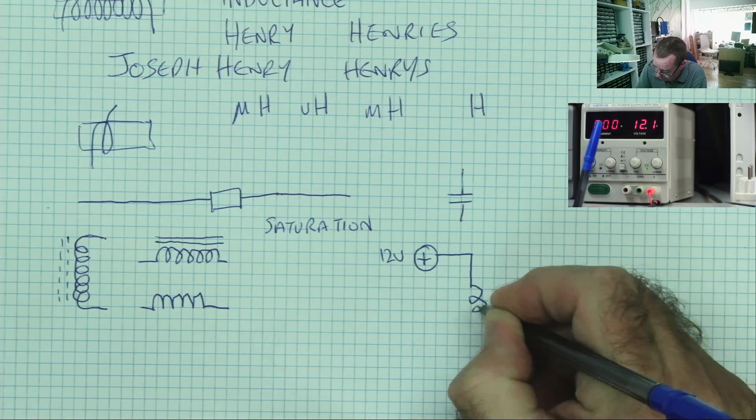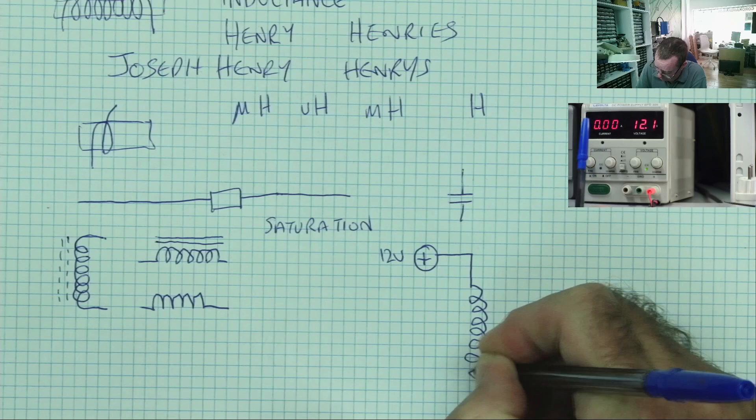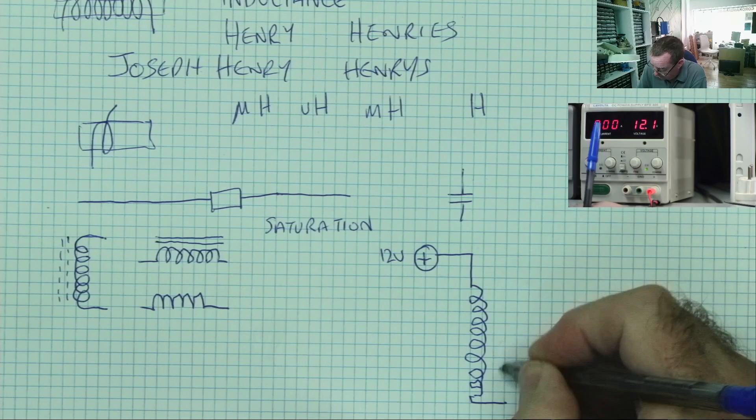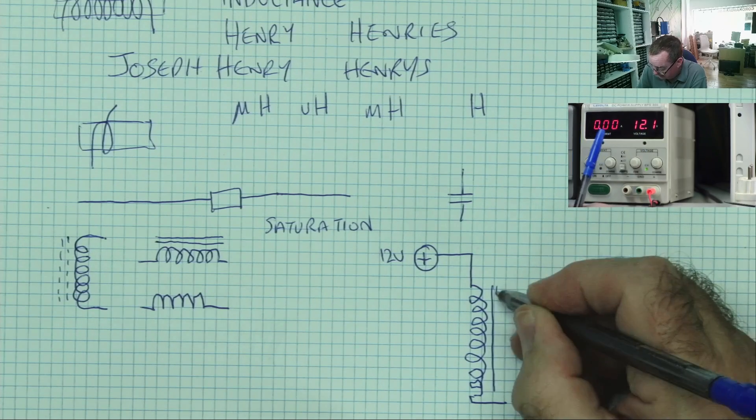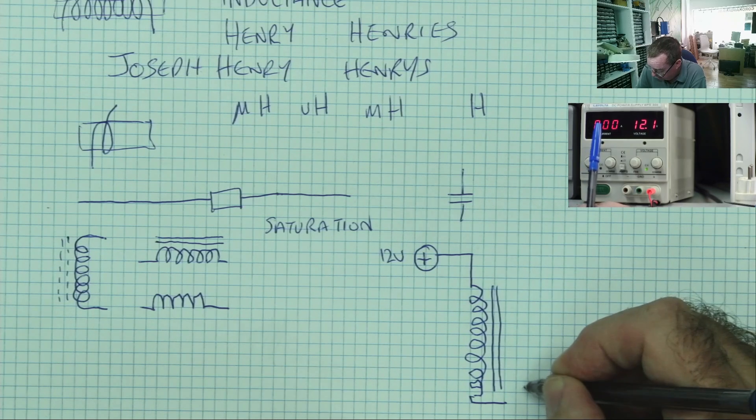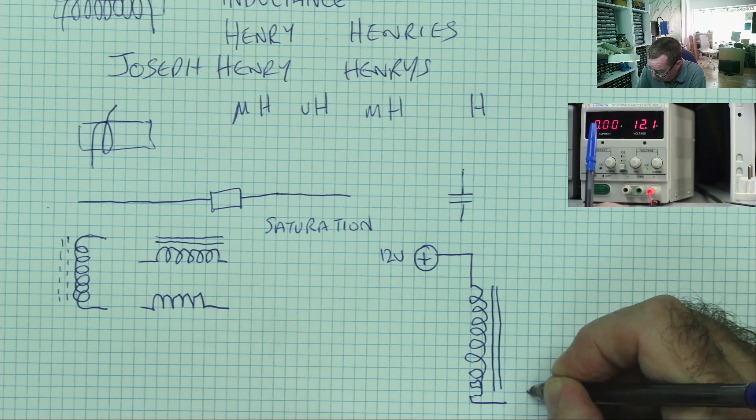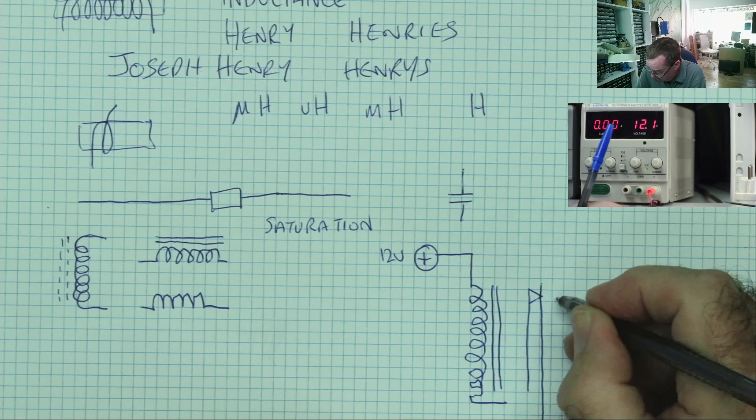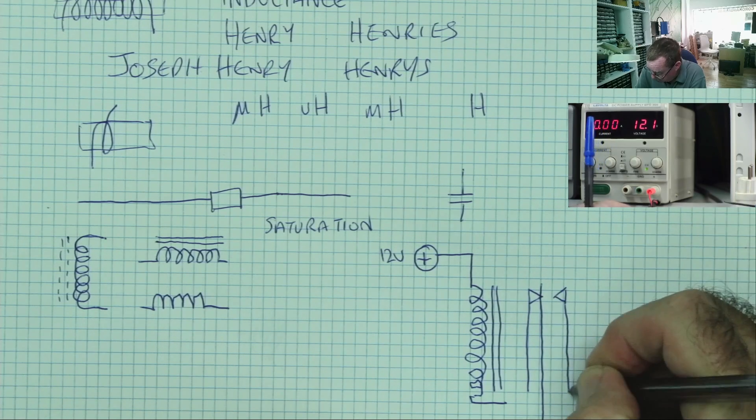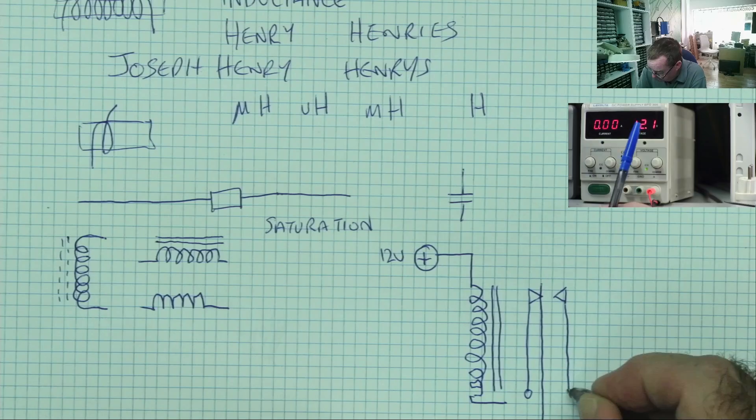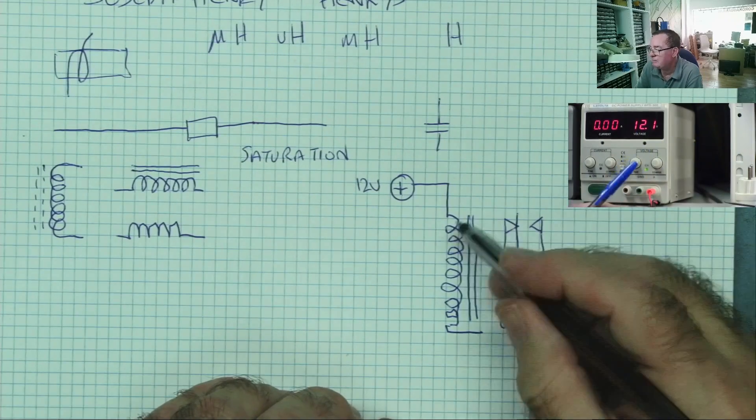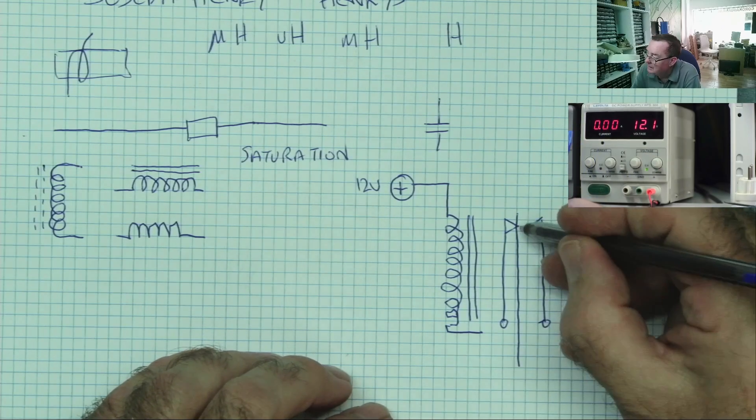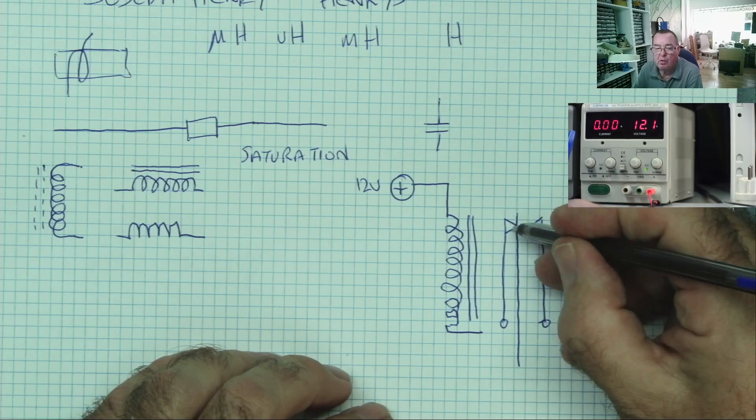We have then a positive supply, in our case 12 volts, connected to a coil, which is an inductor. We'll draw another symbol, so this is a relay. It is drawn like this. So this represents the coil, the solid metal core, and these represent the contacts.